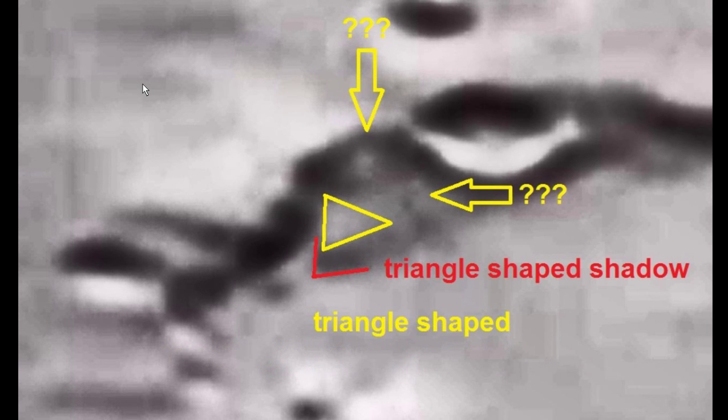This object, by the way, is several miles high and about 15 miles long — that's the size we're talking about. Here we see the triangle-shaped shadow, and the two small objects floating above. After playing with the light and sharpness, we can now clearly see a triangle-shaped shadow.